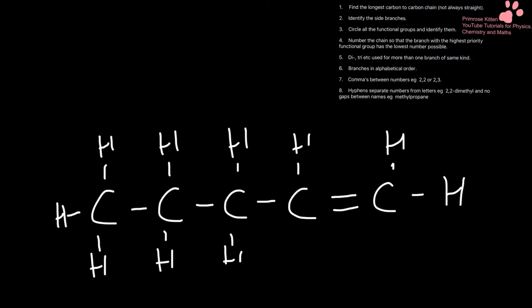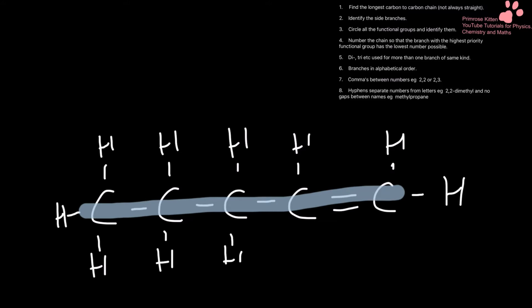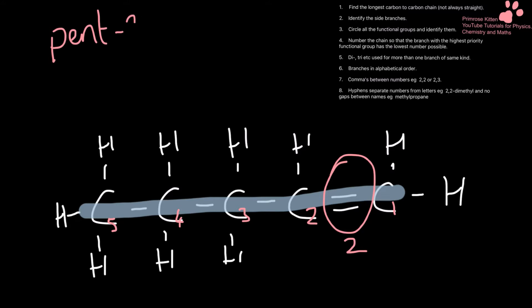Next one here. My longest carbon chain goes along there. My functional group is here and I want it to have the lowest numbers possible, so I need to start numbering from the right-hand side: one, two, three, four, five. My functional group is on carbon number two. It has five carbons, so this is pent-2-ene.